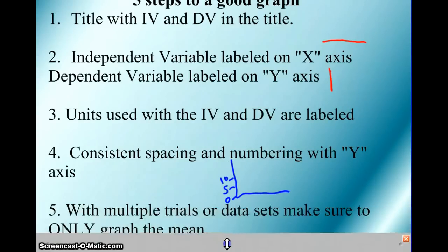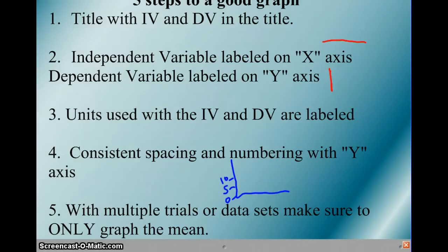The fifth one, if you have multiple trials or data sets, make sure to only graph the mean. I've seen students struggle before trying to graph every single trial and then when they get done, they really can't tell me anything about the graph or what it means. So, make sure you only graph the mean of the data if you have multiple trials or multiple sets of data. Mean is like the average.